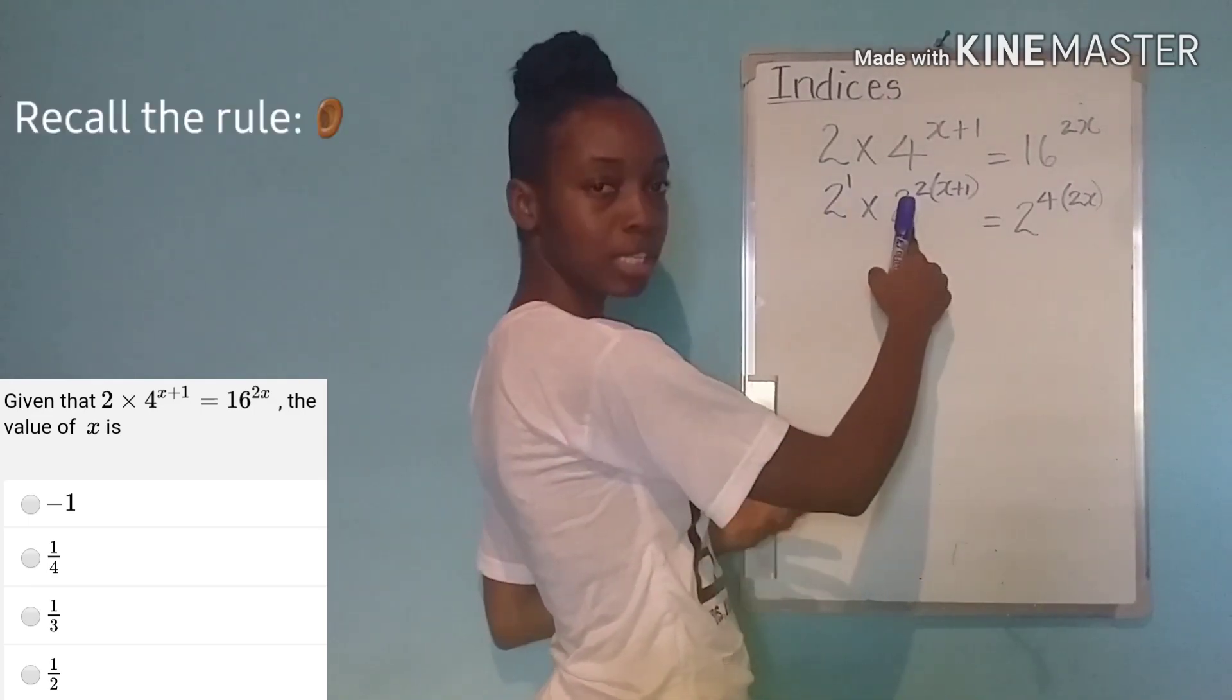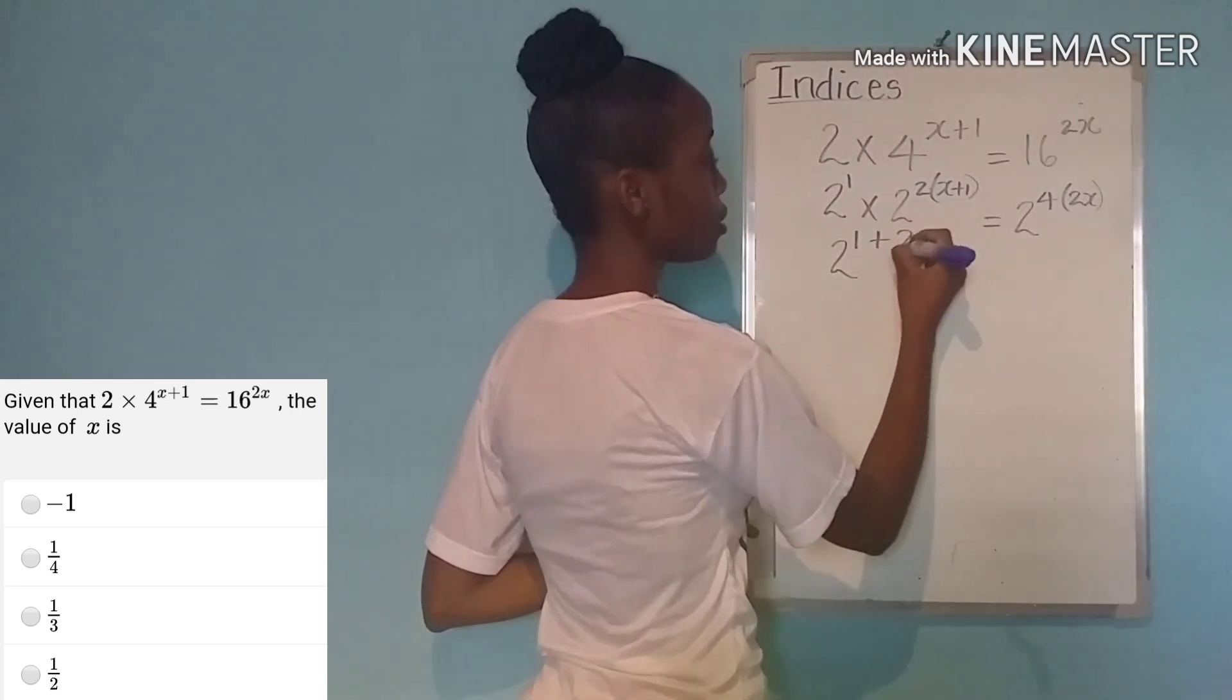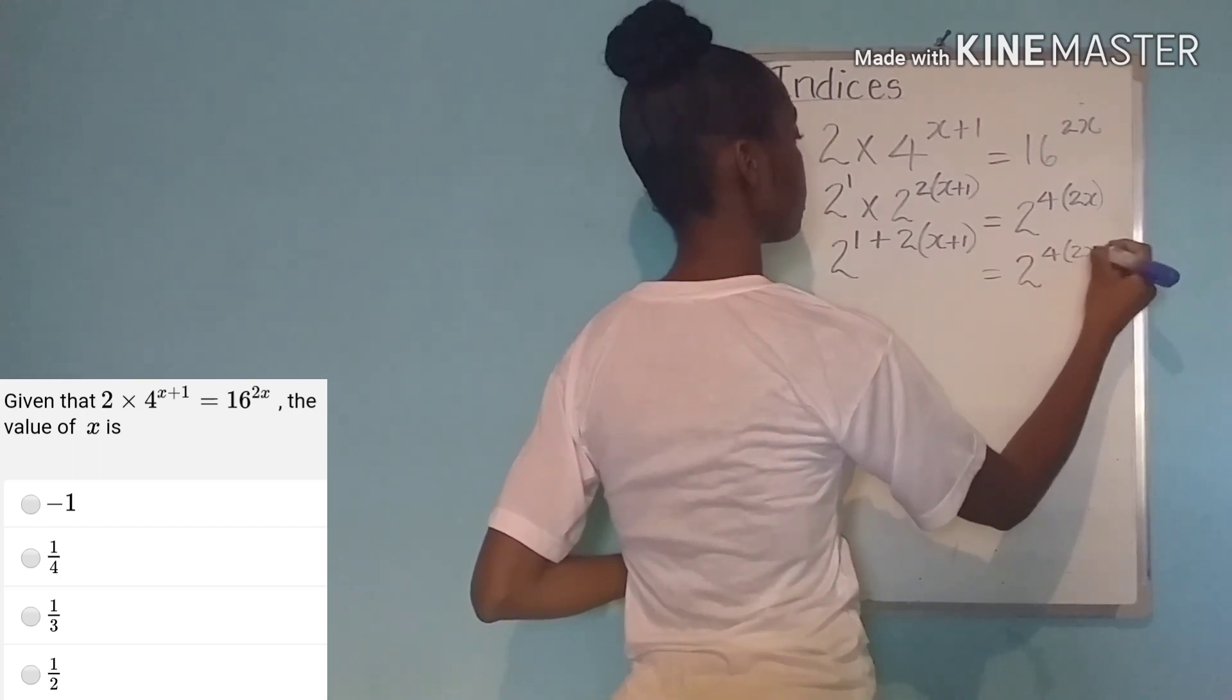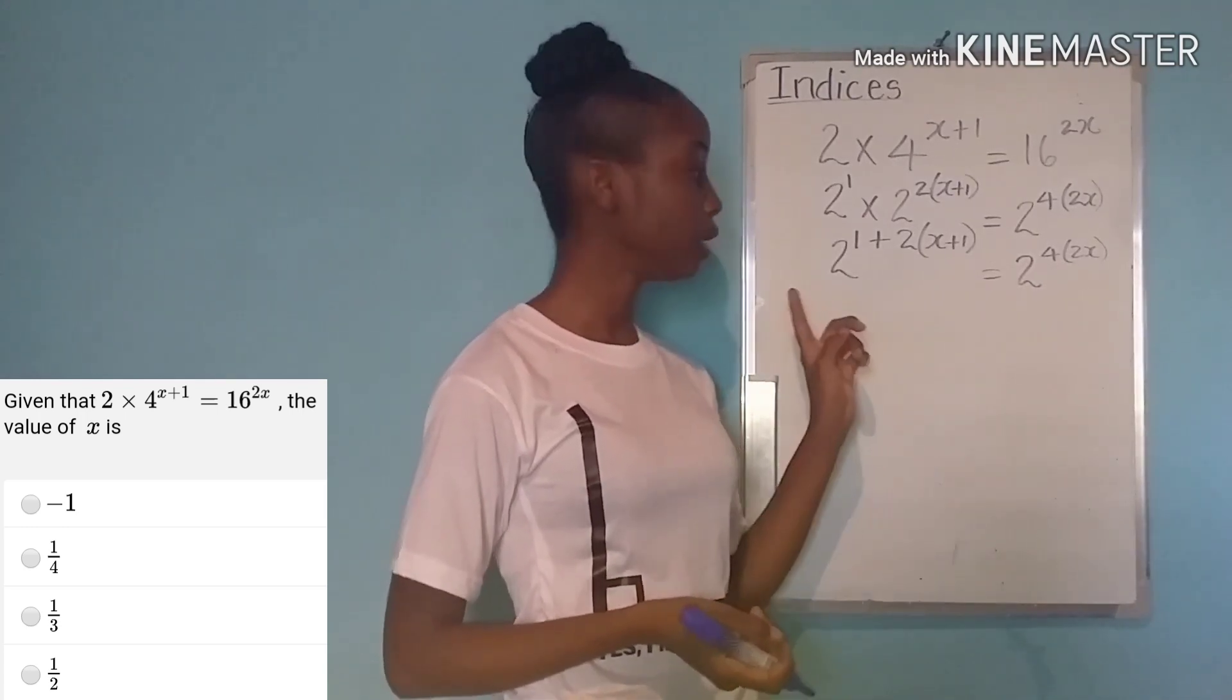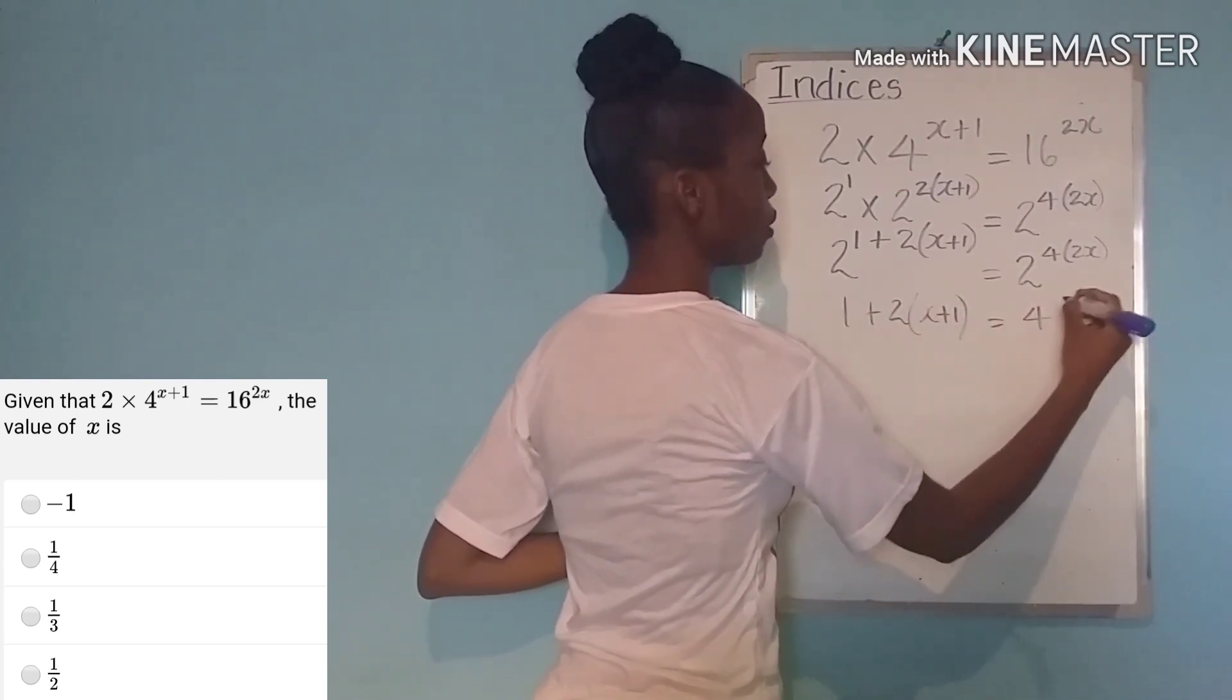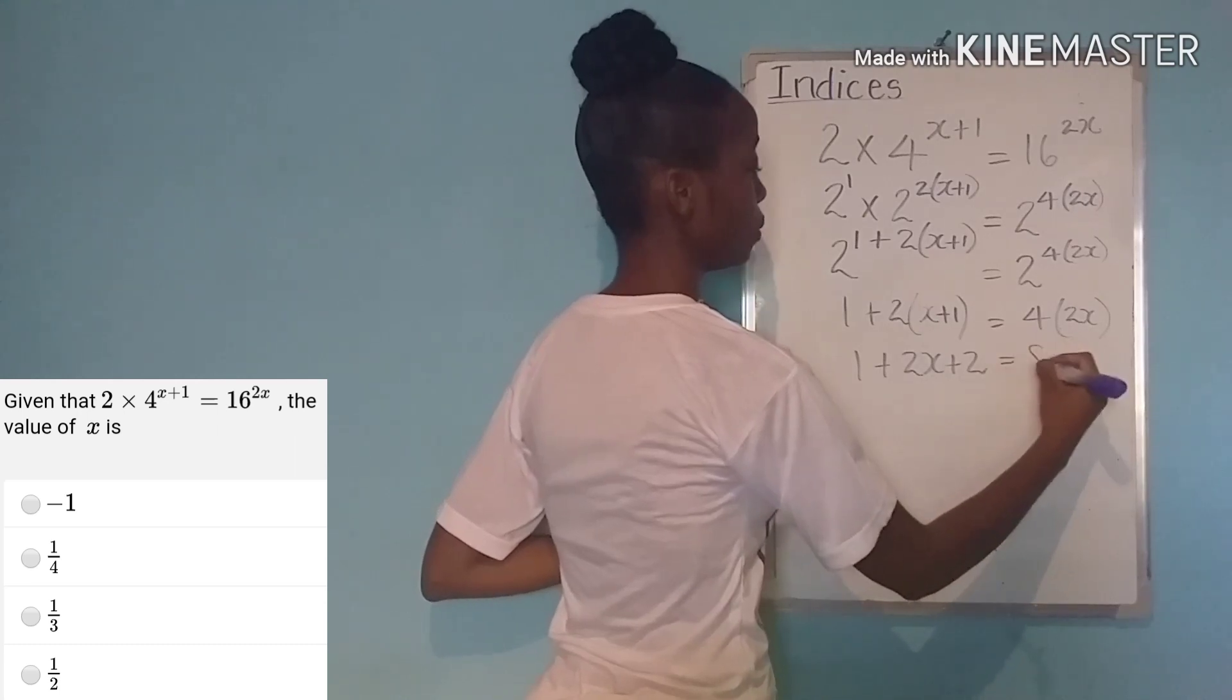Again if the two bases are the same and being multiplied then we can add the powers. So this is going to be 1 plus 2 times x plus 1, which is equal to 2 to the 4 times 2x. Now that our bases are the same we can equate our powers. So that's 1 plus 2 times x plus 1 is equal to 4 times 2x. 1 plus 2x plus 2 equals 8x.